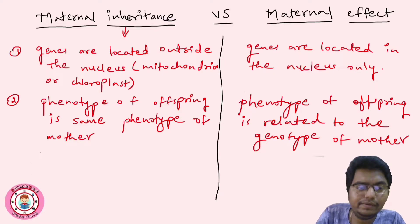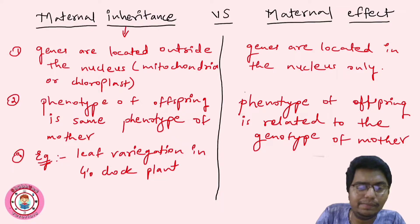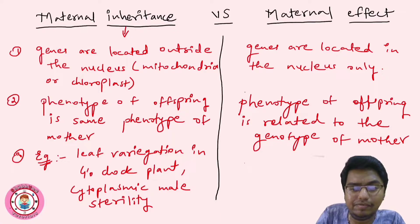The third point covers examples. In maternal inheritance, examples include leaf variegation in the 4 o'clock plant, known as Mirabilis jalapa, and cytoplasmic male sterility. In the maternal effect, the classic example is shell coiling in snails.